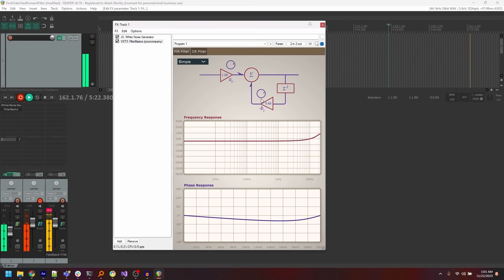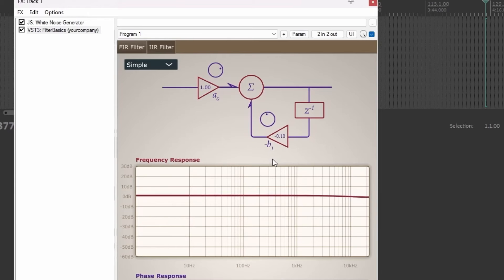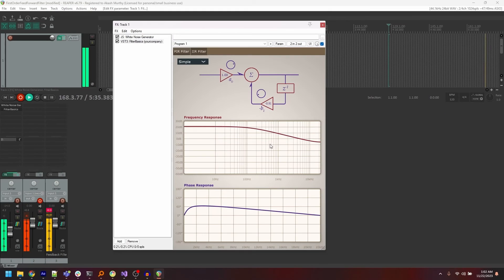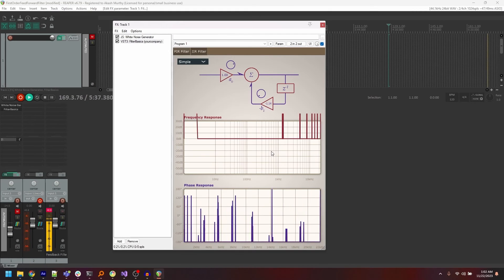Going over to the other side now, when b1 is positive, the lower frequencies are boosted up, and the higher frequencies are attenuated. It's the same story here. The larger the value of b1, the more distinct the response becomes, till it eventually blows up when the value crosses over 1.